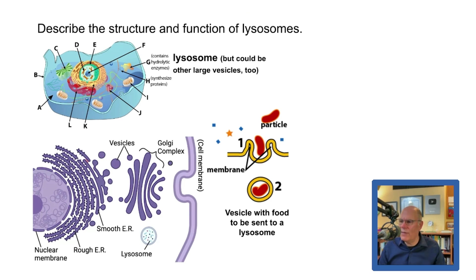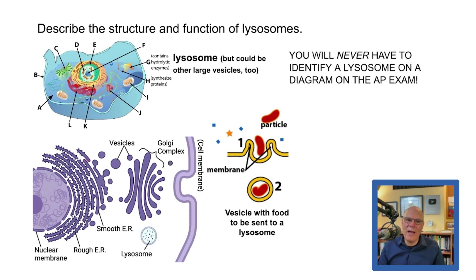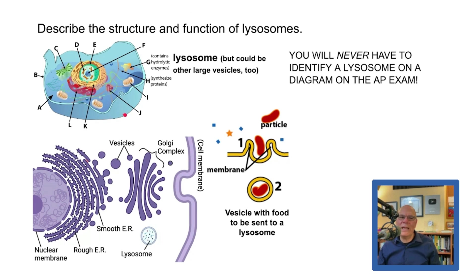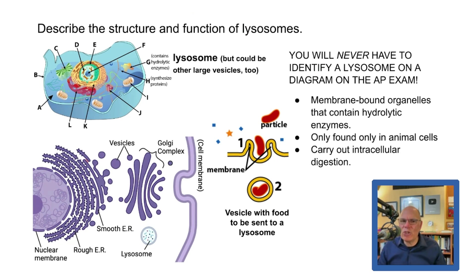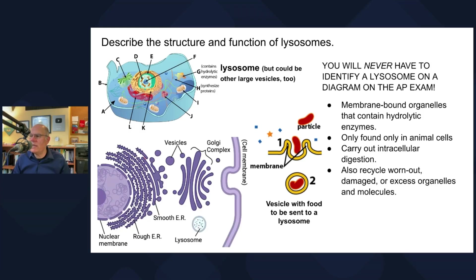The structure and function of lysosomes: you're never going to have to identify a lysosome on the AP bio exam because lysosomes are simply vesicles filled with hydrolytic enzymes — they're found only in animal cells. Their function is intracellular digestion. For example, a worn-out mitochondrion can be engulfed by a vesicle and fused with a lysosome to be digested. They recycle worn-out and damaged organelles, and they play a key role in apoptosis — programmed cell death.